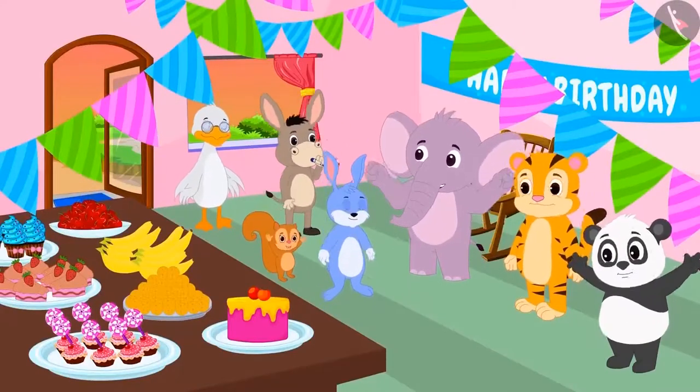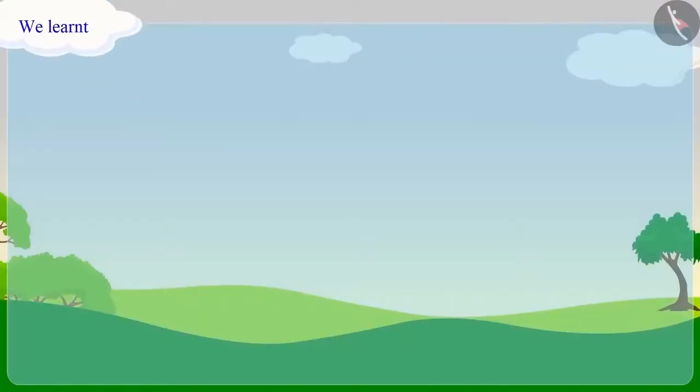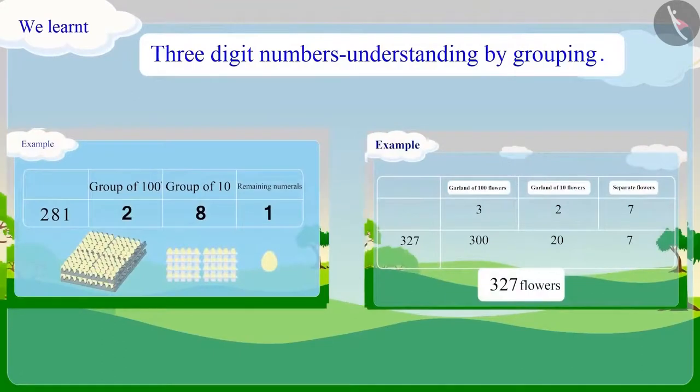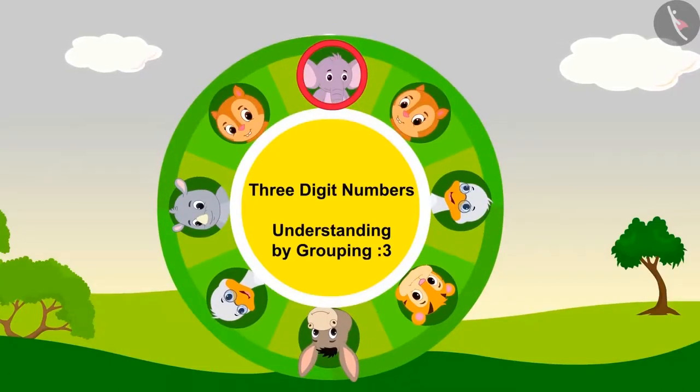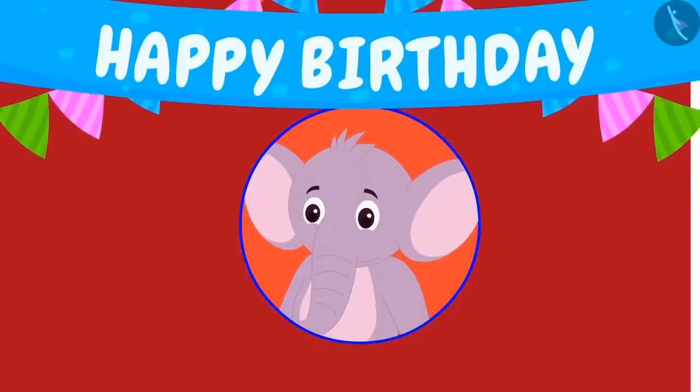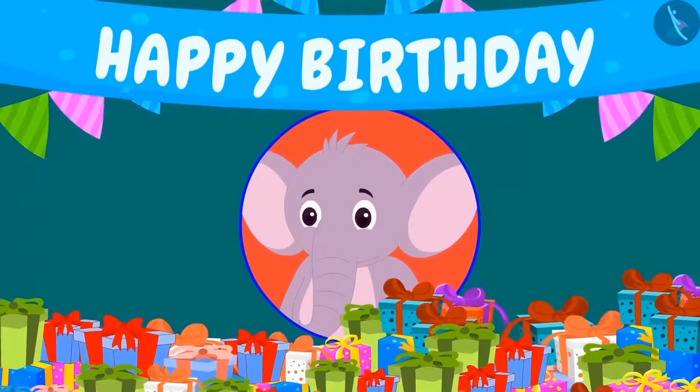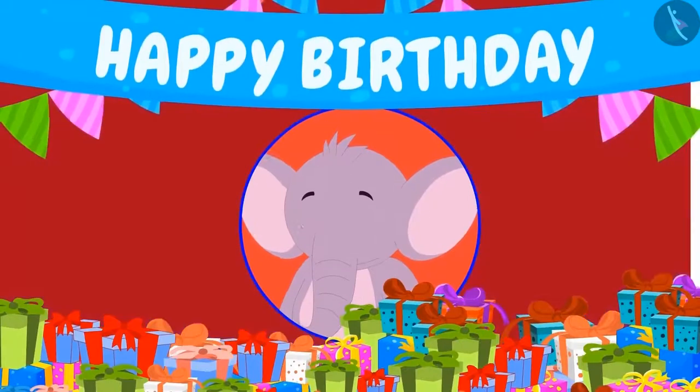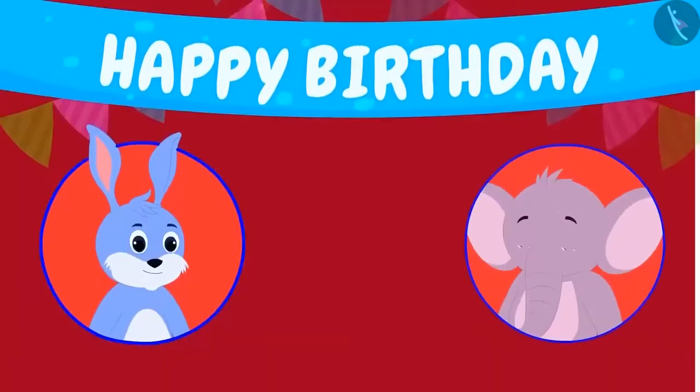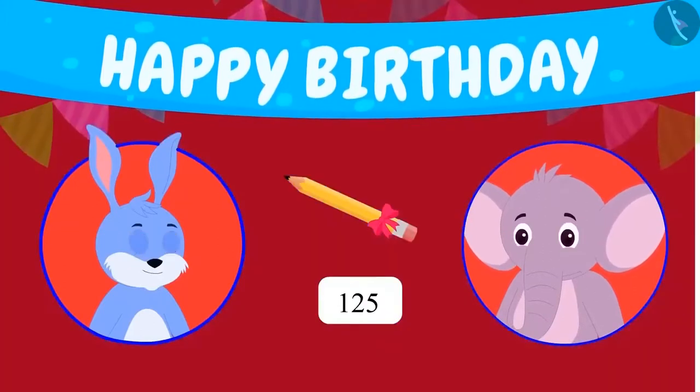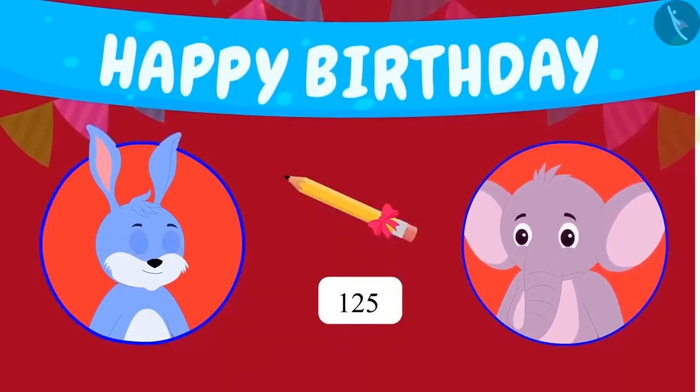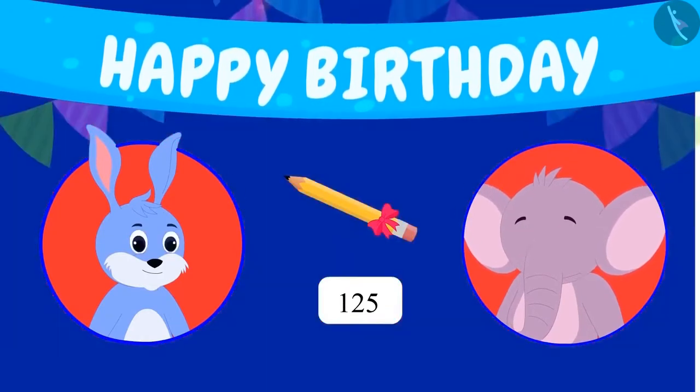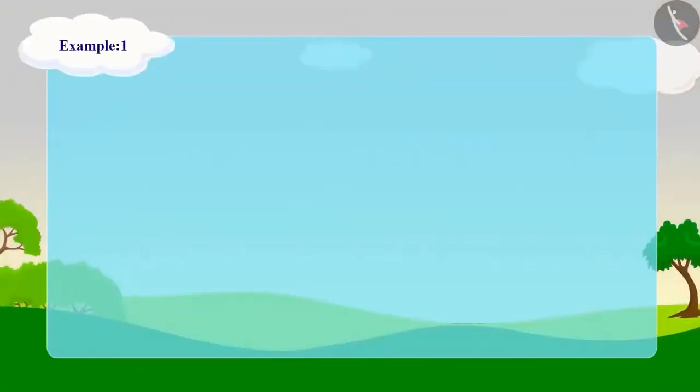Hello children, did you enjoy Appu's party? In the previous video, we learned to identify three-digit numbers by grouping. In this video, we will learn to write three-digit numbers using tokens. Appu received a lot of gifts in his party. Let's see what gifts he received. Bunny has gifted Appu 125 pencils. But because Bunny makes a mistake while counting fast, Appu is counting them again. Appu is counting pencils in a unique way.